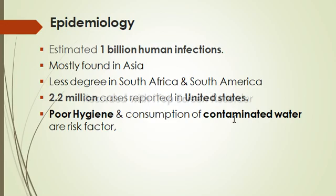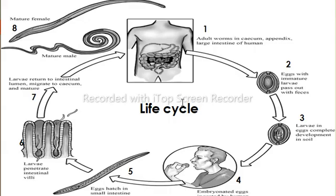Children are especially vulnerable to infection due to their high exposure risk. The life cycle begins when the female lays eggs in the large intestine of an infected human. These eggs are carried out in the feces to the environment. If the eggs land on warm and moist soil for 2 to 3 weeks, the larvae within the eggs complete development and become infective, ready to be ingested.